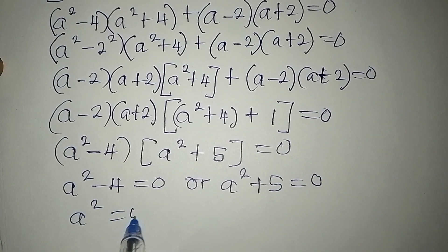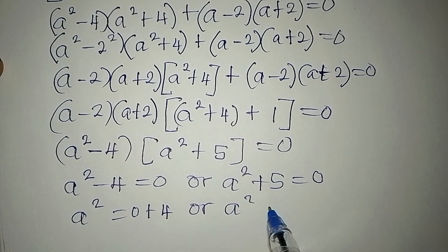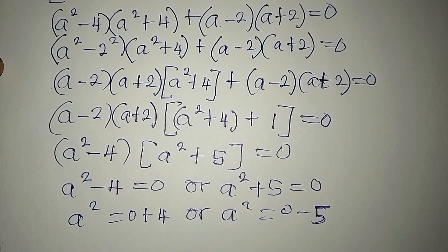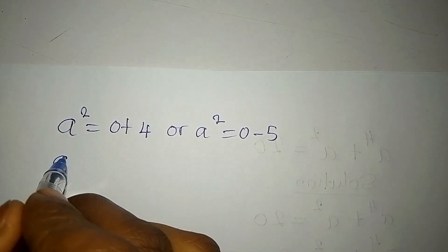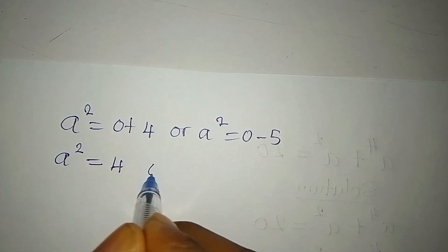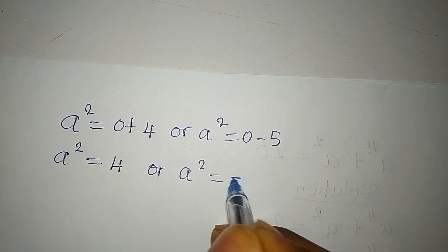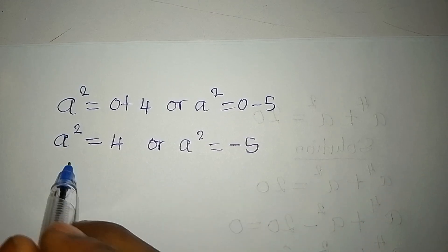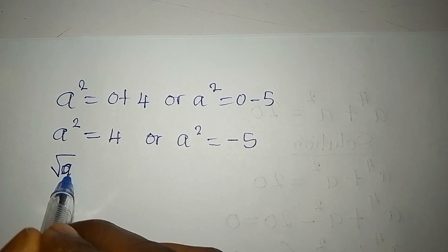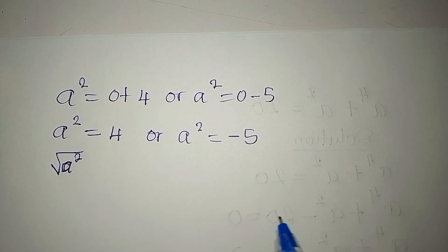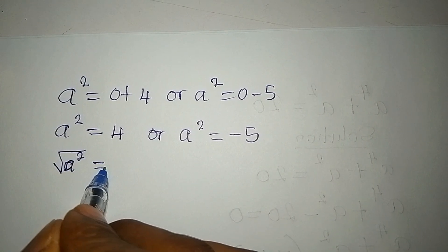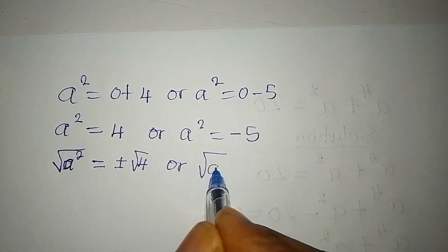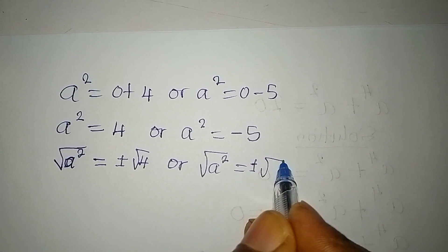A squared equals 0 plus 4, or A squared equals 0 minus 5. So A squared equals 4, or A squared equals minus 5. We are to find both the real and the complex solutions. We will take the square root of both sides: square root of A squared equals plus or minus square root of 4, or we take the square root of A squared equal to plus or minus square root of minus 5.